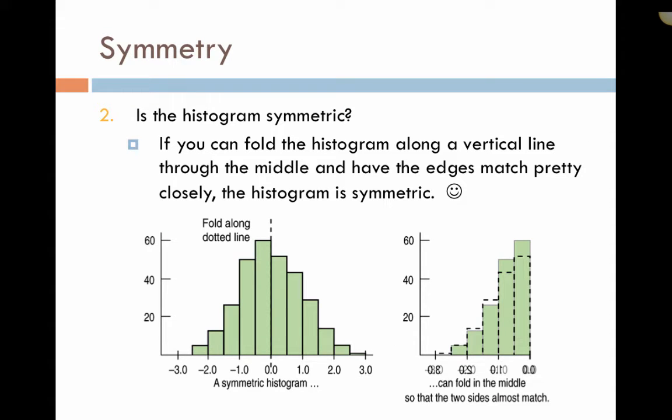Moving on to symmetry, a histogram can be symmetric if it's folded in half and can be the same on both sides. It does not have to be exactly the same. We're looking for it to be approximately symmetric and that will work for us. With this histogram here, you can see that if you fold it in half, there are some differences. Those differences are okay because we're only looking for it to be approximately symmetric.